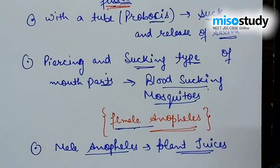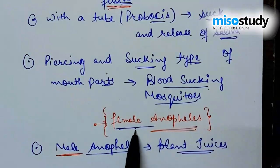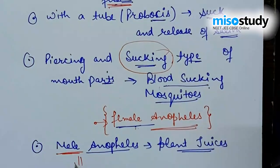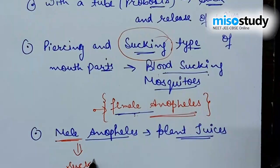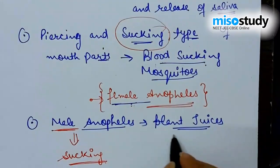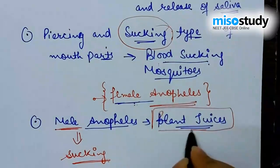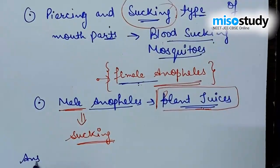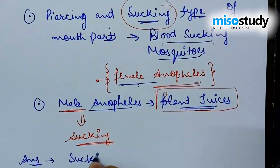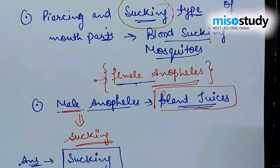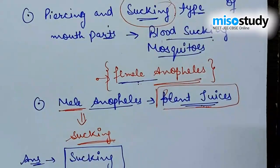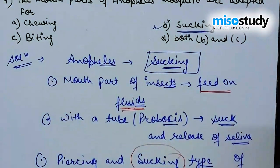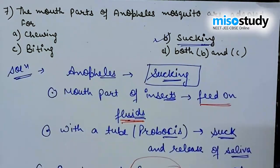The peculiar features of piercing and sucking type of mouth parts can be seen in blood-sucking mosquitoes, with the best example being female Anopheles mosquito. The male Anopheles also shows sucking type of mouth parts, but feeds on plant juices. The female Anopheles feeds on blood, so both male and female show sucking mouth parts. So the right answer is option B — sucking type of mouth parts.